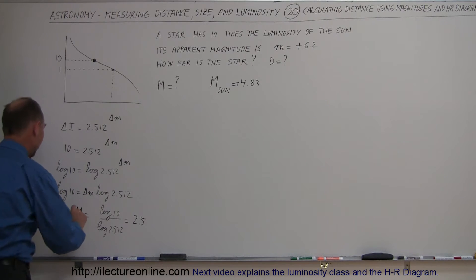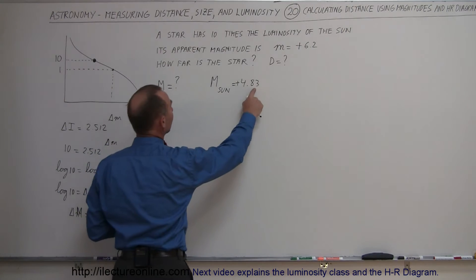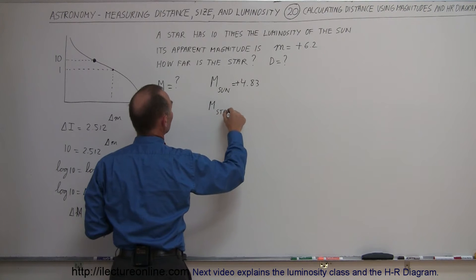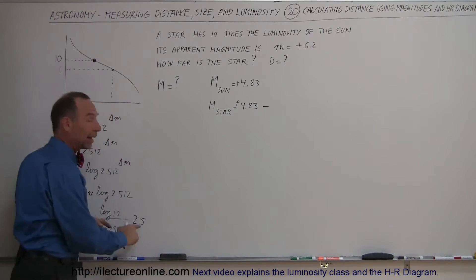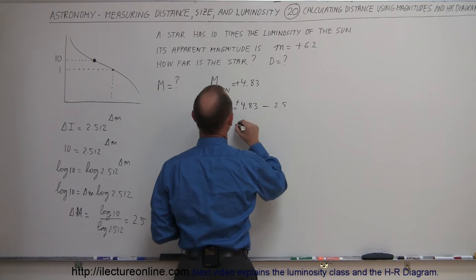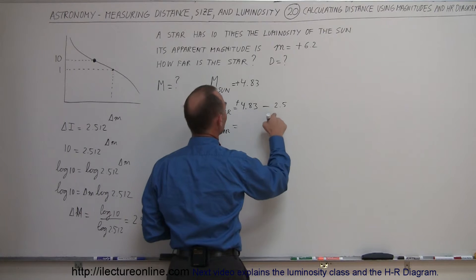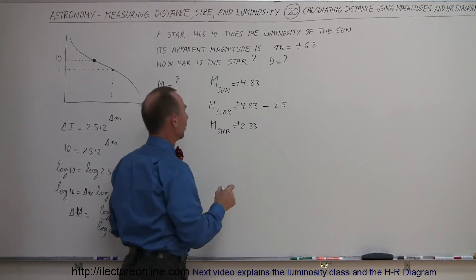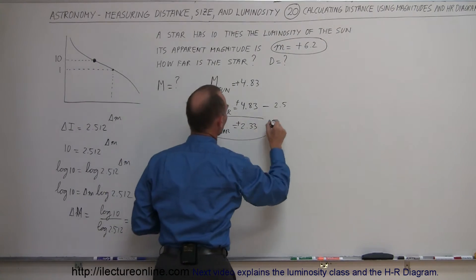We're looking for the difference in absolute magnitudes, so using a big M. Since the sun is 4.83 and this star is brighter, the absolute magnitude of the star equals 4.83 minus 2.5, because it's a brighter star its magnitude number will be smaller. That gives us an absolute magnitude of 2.33 — and that's still a plus.